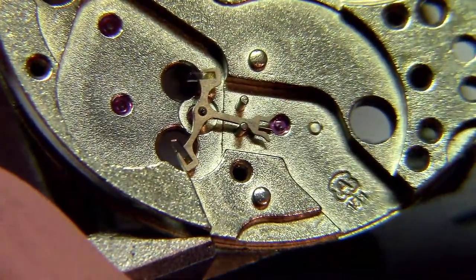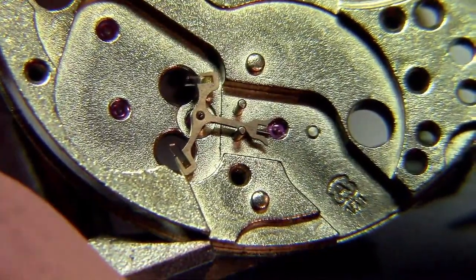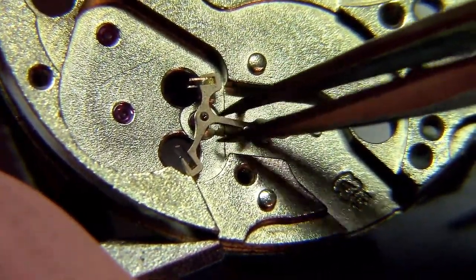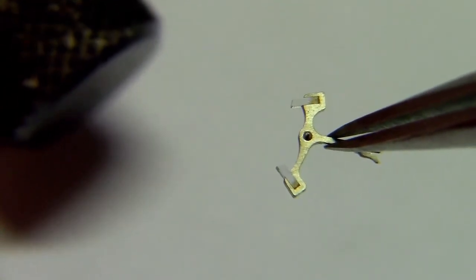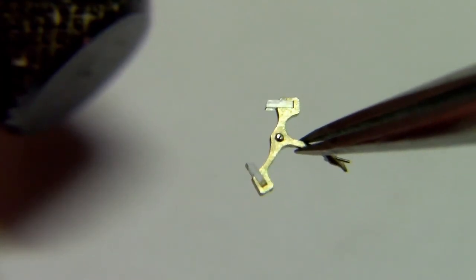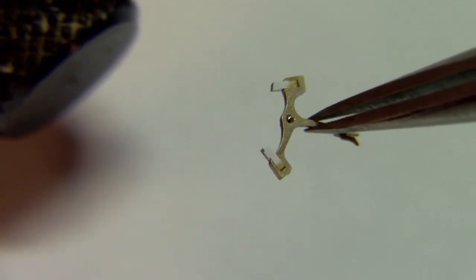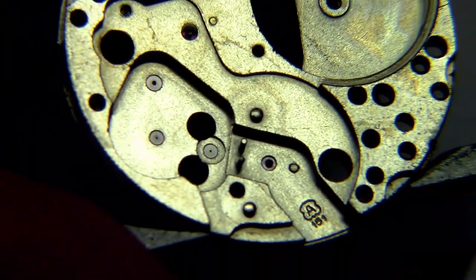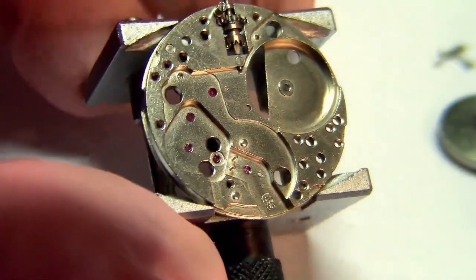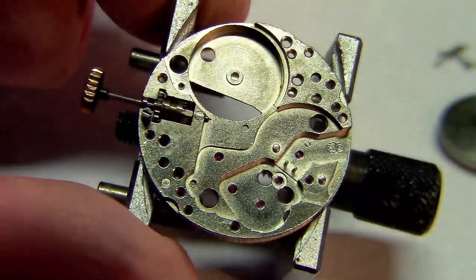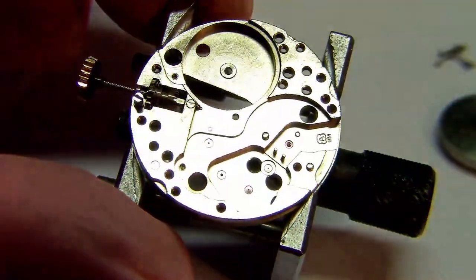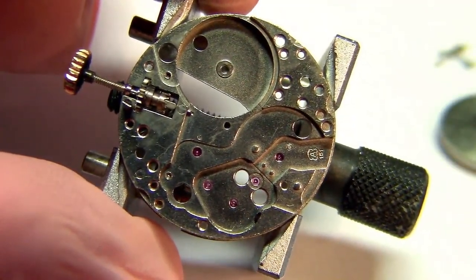Just as a curiosity, this pallet fork uses sapphires on the jewels instead of rubies. As I already mentioned in the video about sapphires, rubies are actually red sapphires—they are the same composition, only with the addition of chromium to make them red. All that is left here is the main plate, which is the movement chassis, if you will.